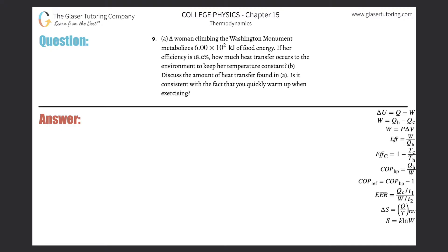Number nine, letter A. A woman climbing the Washington Monument metabolizes 6 times 10 to the 2 kilojoules of food energy. If her efficiency is 18%, how much heat transfer occurs to the environment to keep her temperature constant?